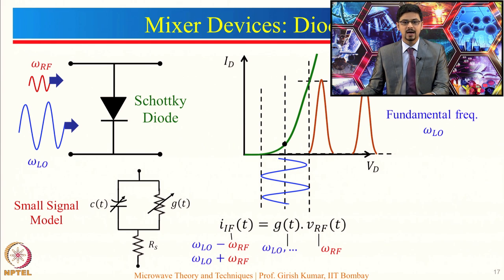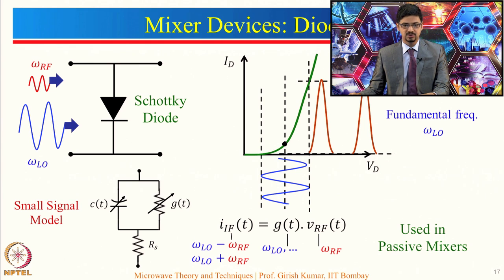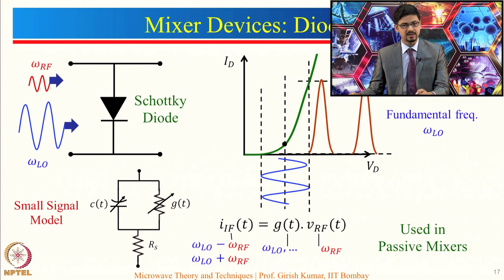Because a diode cannot provide signal amplification, diodes are mainly used in passive mixers. There are two types of mixers depending on whether they provide signal amplification: one is a passive mixer and another is an active mixer. If you use diodes, the mixer will be of passive type.